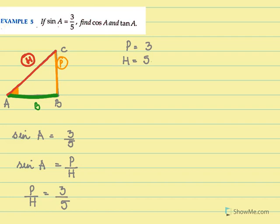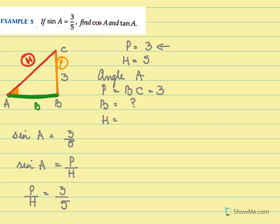So it is given to us that perpendicular is 3. For angle A, perpendicular we saw is BC, which we now say is 3. The base, we still don't know. However, the hypotenuse is given as 5. So hypotenuse AC is 5. First we'll find the base, and you know the base is AB. Let's use Pythagoras' theorem.